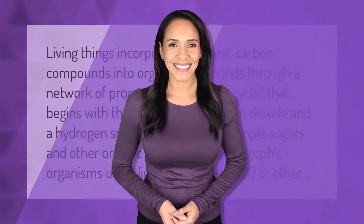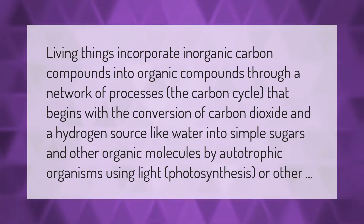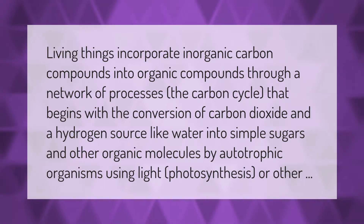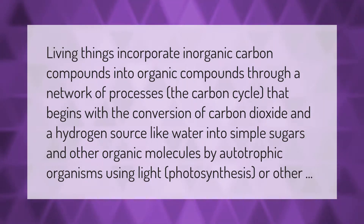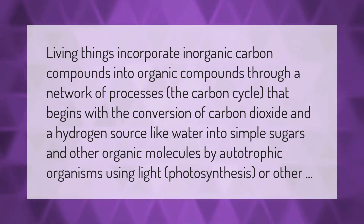Living things incorporate inorganic carbon compounds into organic compounds through a network of processes called the carbon cycle, which begins with the conversion of carbon dioxide and a hydrogen source like water into simple sugars and other organic molecules by autotrophic organisms using light — a process known as photosynthesis.